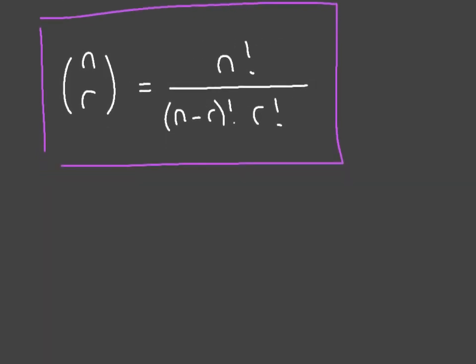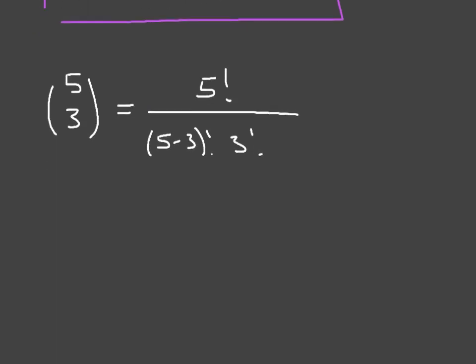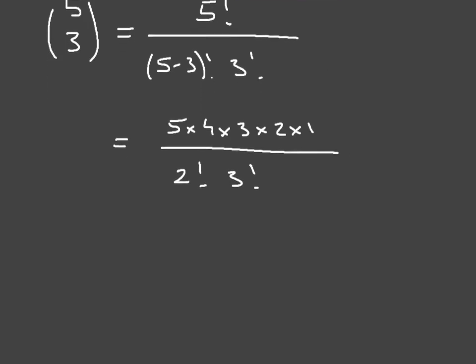Let's say we had to calculate the binomial coefficient with 5 and 3. Using this formula we can see that this would be equal to 5 factorial over 5 minus 3 factorial times 3 factorial. Now the numerator is equal to 5 times 4 times 3 times 2 times 1, and the denominator would be equal to factorial of 2 times factorial of 3.